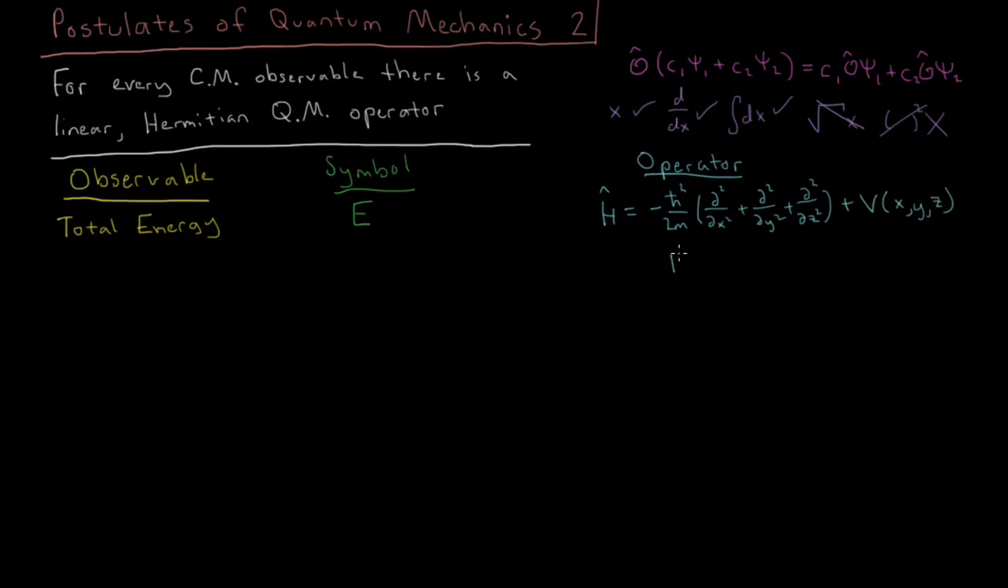If you're just in one dimension, then this simplifies down to minus h-bar squared over 2m, second derivative with respect to x, plus v, which only depends on x. So that's total energy.